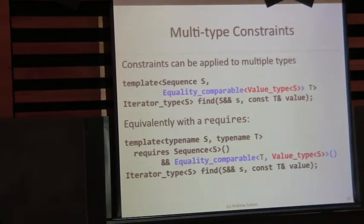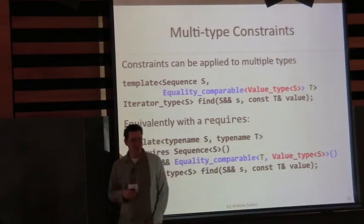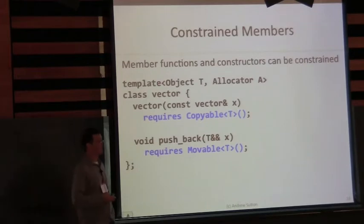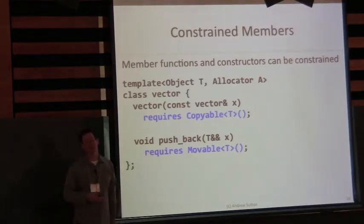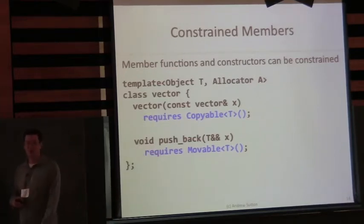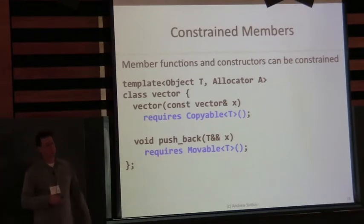What is the difference between the requires clause after a template parameter list and the one after a function definition? The requires clause after a template parameter list represents your template constraints — those act as a precondition to the instantiation of the declaration. If you think about the instantiation process for class template definitions, these declarations are instantiated regardless of whether the constraints are satisfied, so the member constraints end up being declaration constraints telling you when you can or cannot use the declaration.